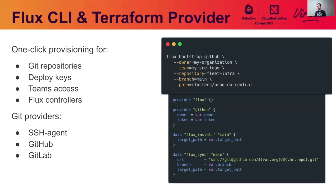We've also developed a new Flux CLI and a Terraform provider, so we can have a GitOps-first approach to bootstrapping clusters. The Flux CLI comes with a single command where you can create your Git repos, install Flux on the cluster, and pair the two with deployment keys, team access, and so on. It works with a variety of Git providers over SSH directly, with the GitHub API or GitLab API, and so on.